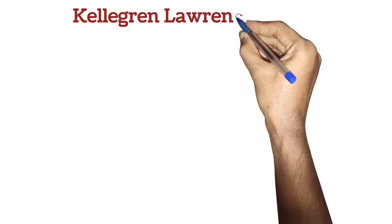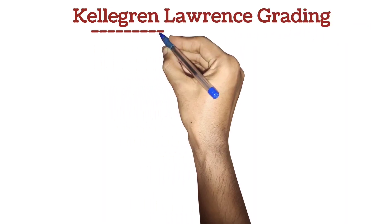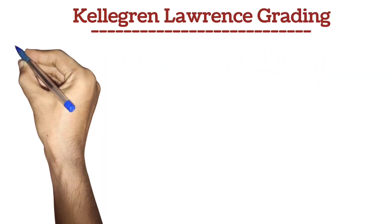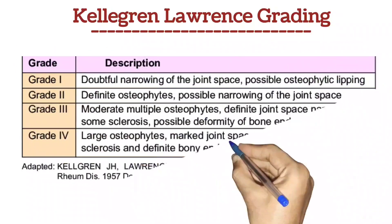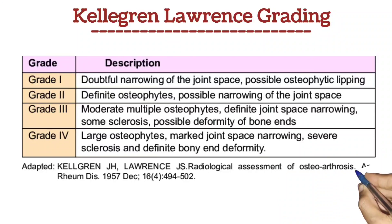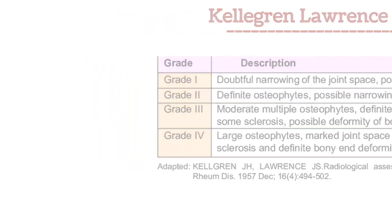Kellgren-Lawrence Grading: The severity of knee OA can be assessed using the Kellgren-Lawrence grading system, which categorizes the condition into five grades based on radiographic findings.